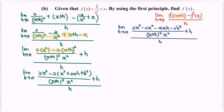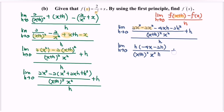Next, simplify the situation. The 2x squared minus 2x squared gives 0. So we have: limit when h approaching 0, h times (negative 4x minus 2h) over (x plus h) squared multiplied with x squared, plus h, all over h. Rewriting, we will have negative 4x minus 2h over (x plus h) squared multiplied with x squared, plus 1.